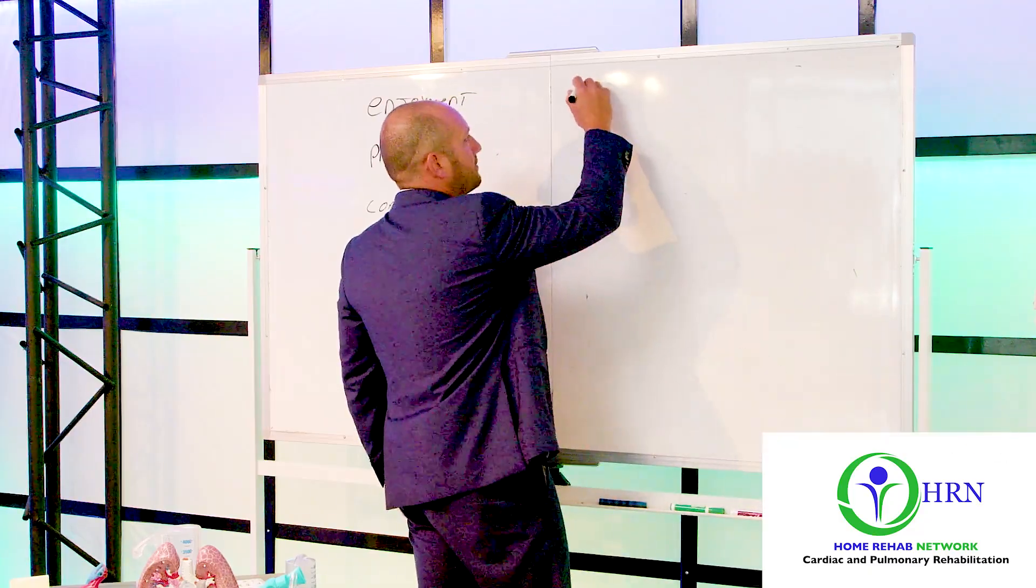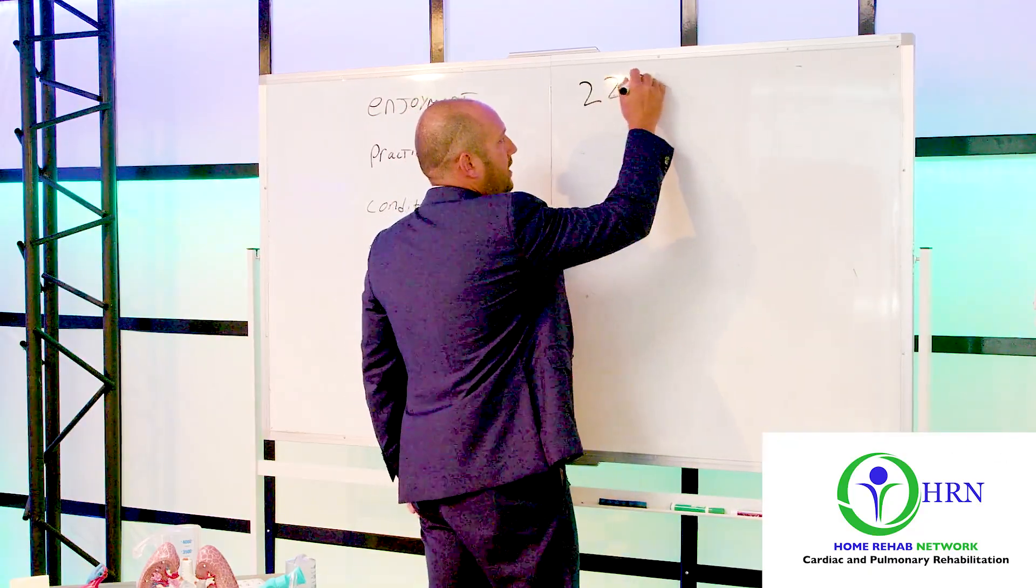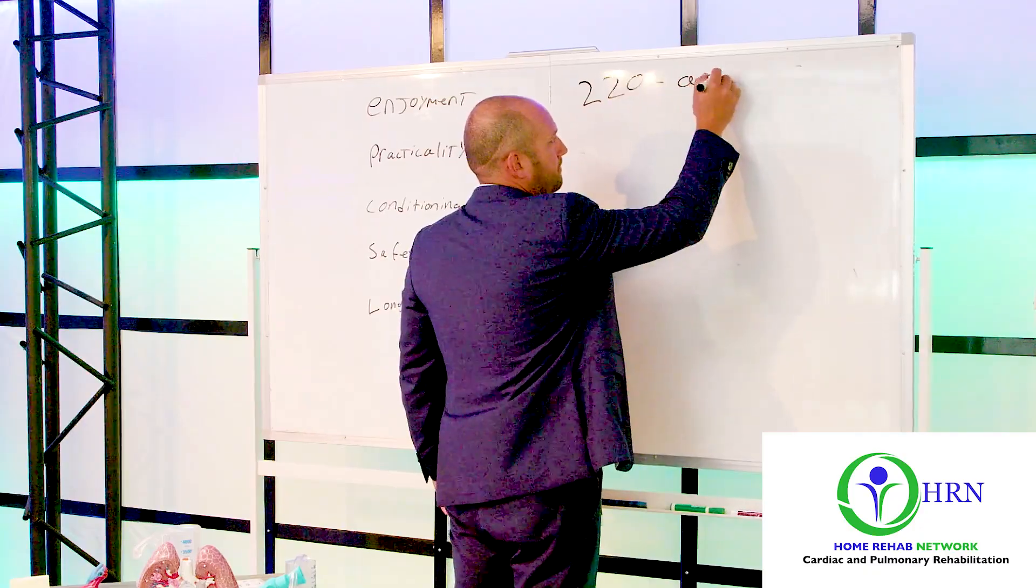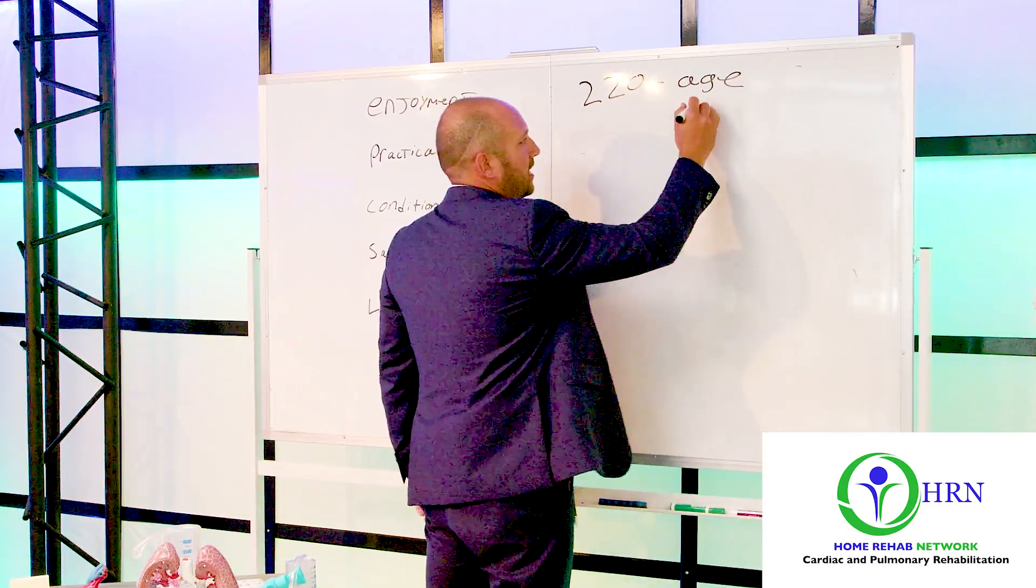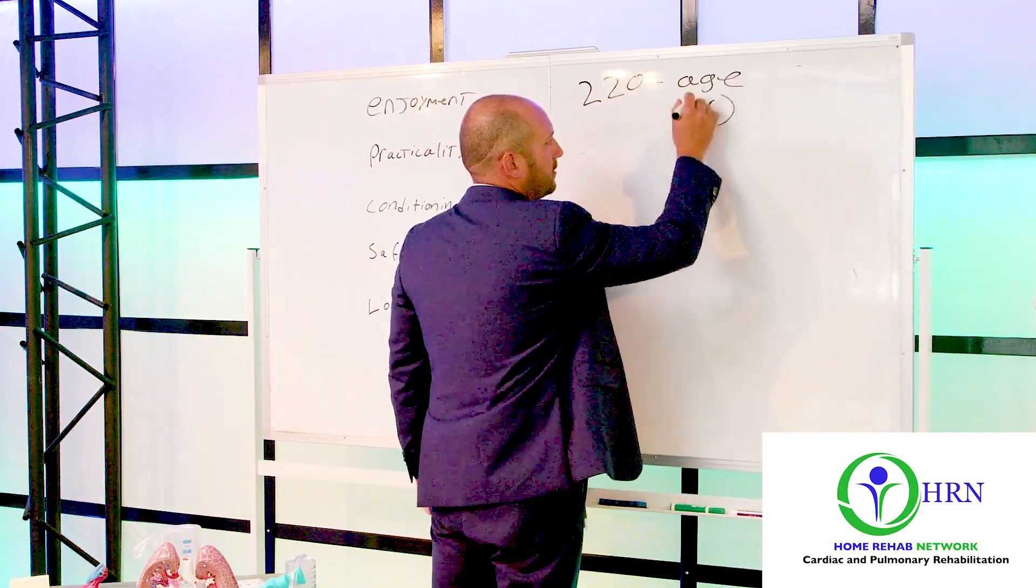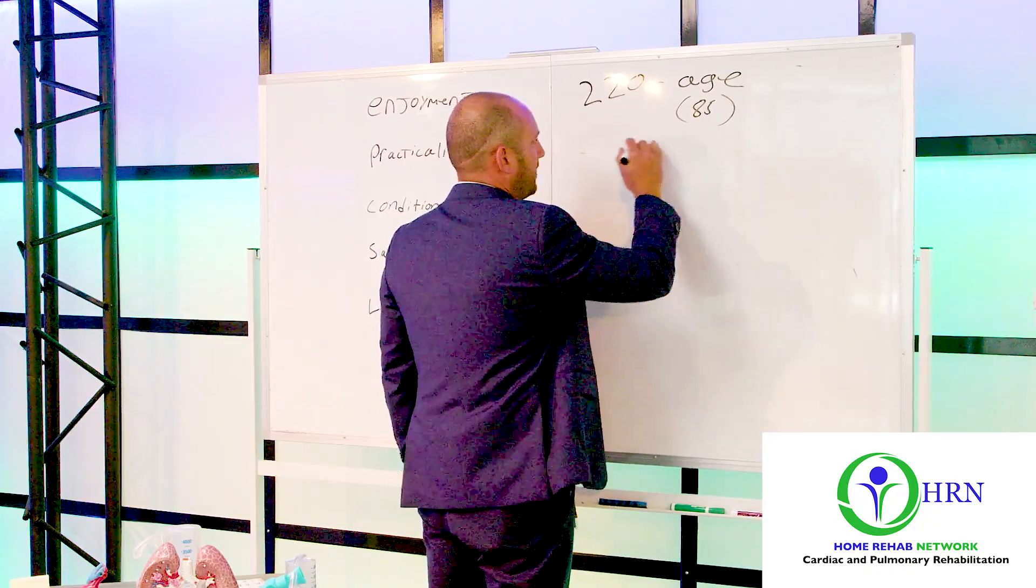Remember that maximum heart rate, 220 minus your age. So let's say I'm 85 years old. 220 minus 85 is 135.